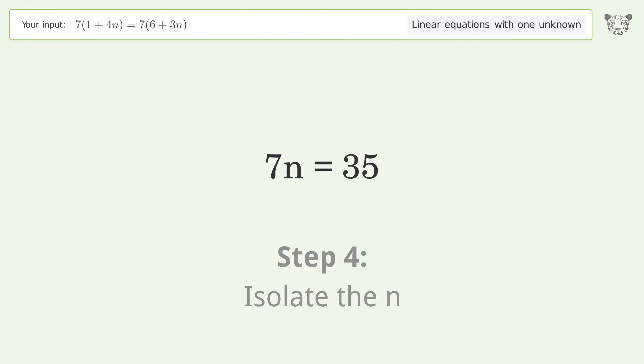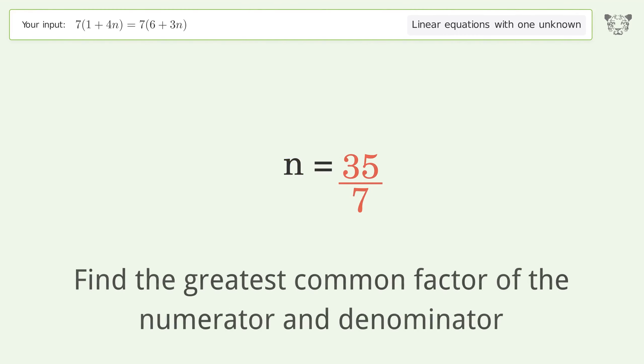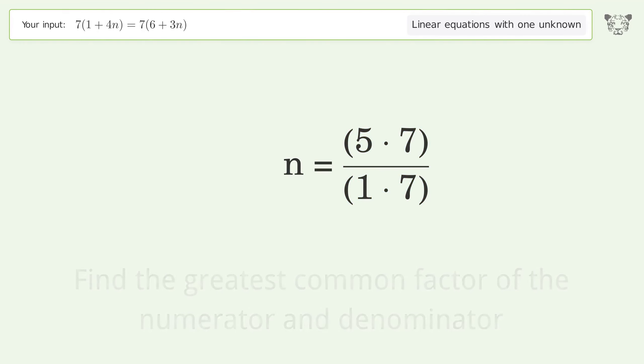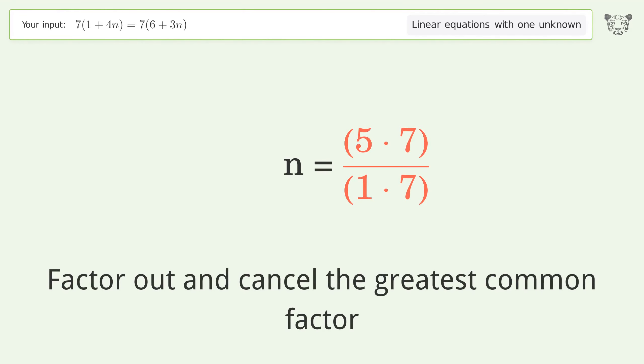Isolate the n. Divide both sides by 7. Simplify the fraction. Find the greatest common factor of the numerator and denominator. Factor out and cancel the greatest common factor.